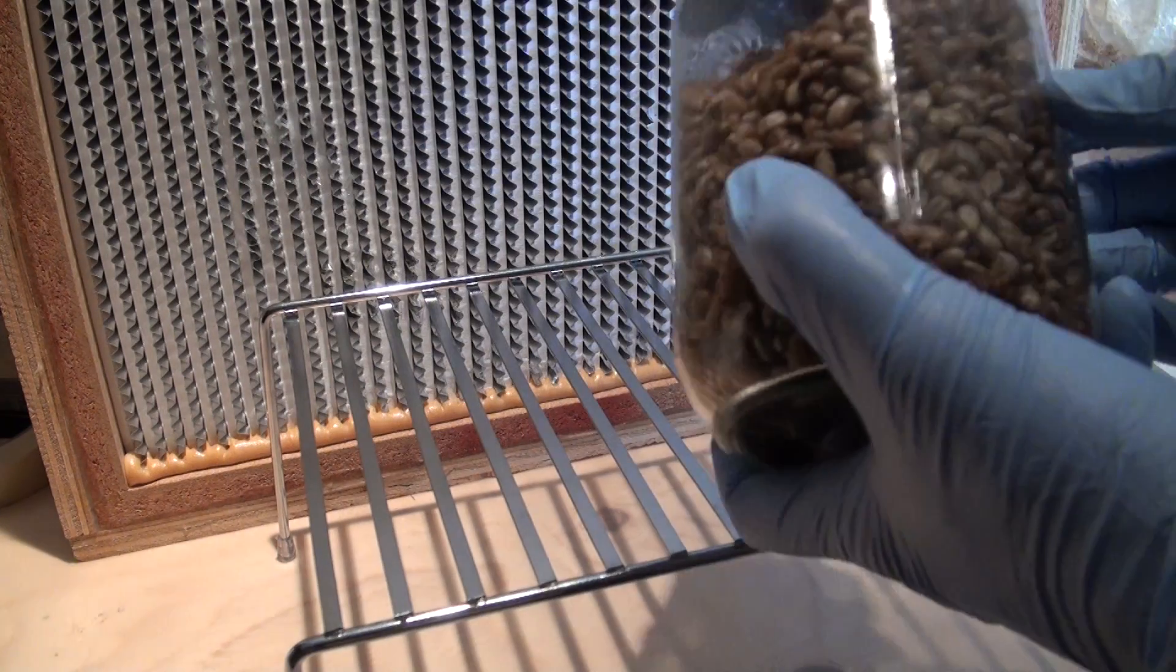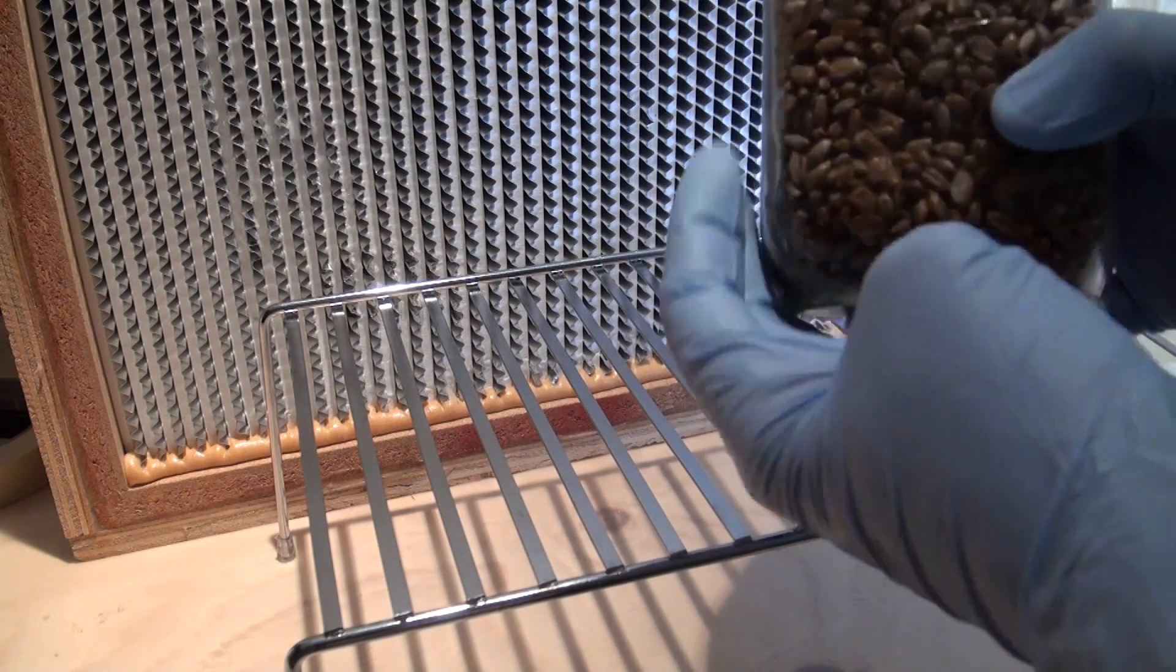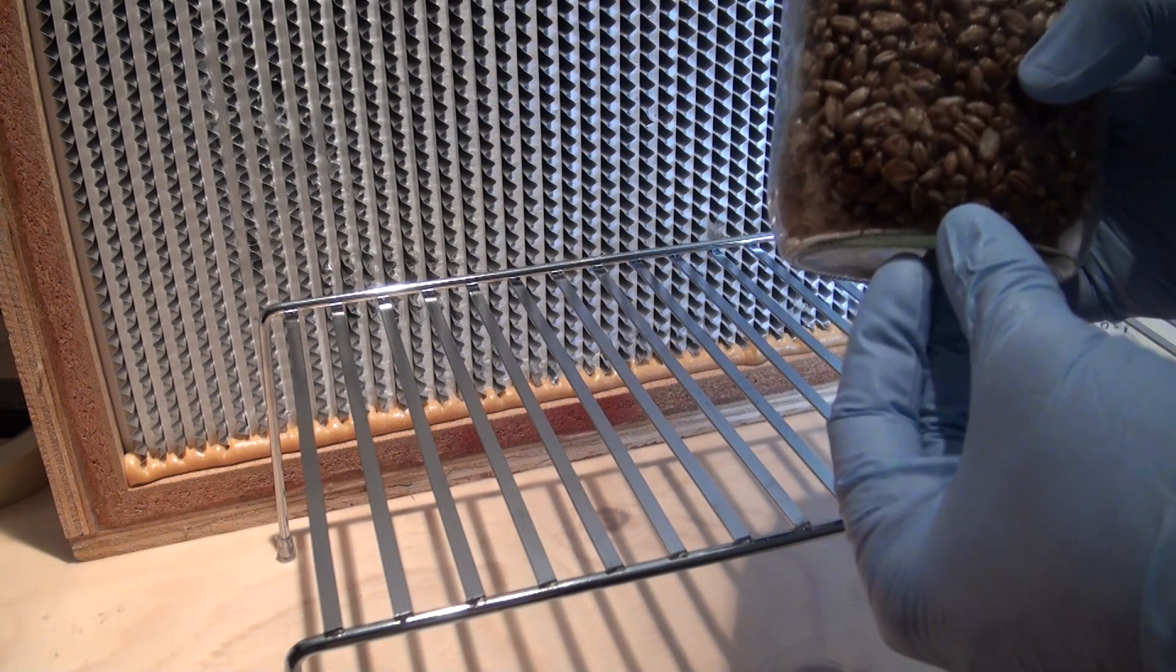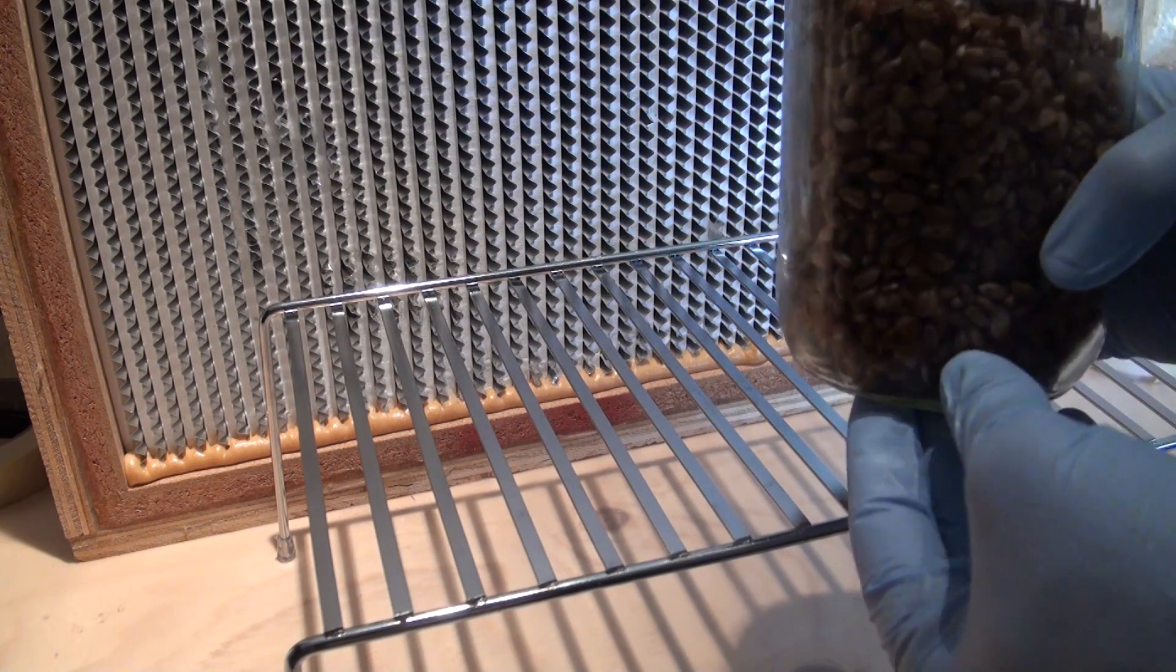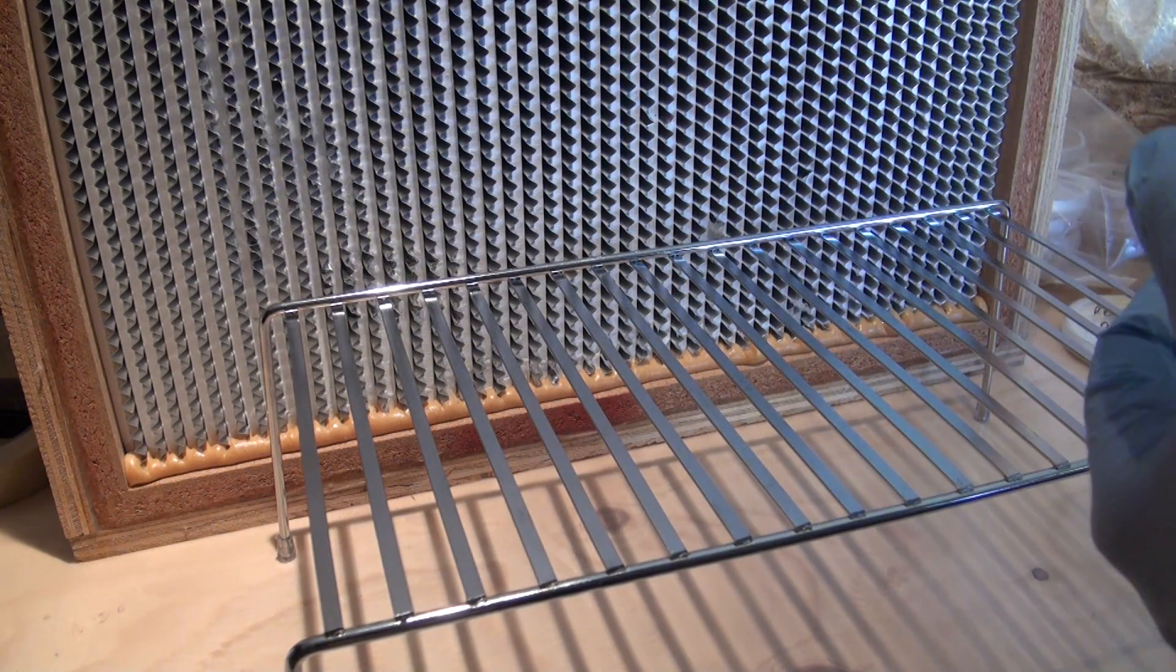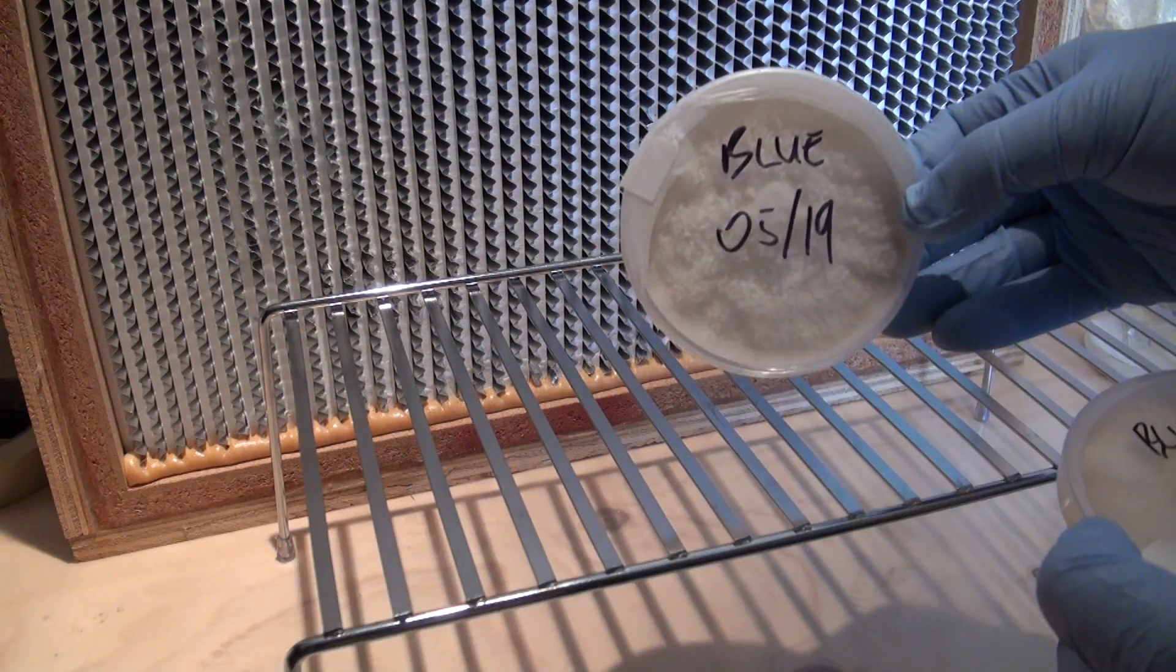We're getting ready to inoculate these freshly sterilized jars of grain to make first-generation grain spawn. So let's take a look at some of the agar dishes that we made. Here's the blue oyster mushroom.